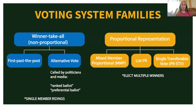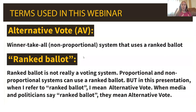I wanted to start with a review of voting system families. For our purposes here in Canada, there are basically two main families of voting systems. There are winner-take-all families that are not proportional — systems in that family would be first past the post and alternative vote. When you hear the media or politicians say 'ranked ballot,' they are almost inevitably, 99.999% of the time, referring to the winner-take-all alternative vote system. Proportional systems can use ranked ballots too, but when I use the term ranked ballot in this webinar, I'm referring to the alternative vote, the non-proportional system.